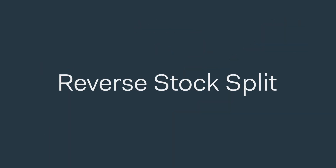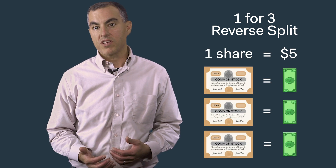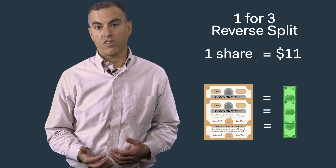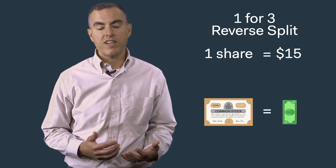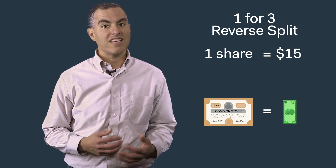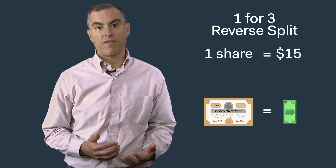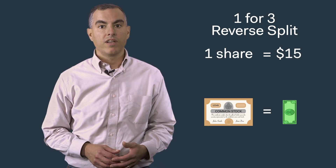There is also a reverse stock split, which is the opposite of what we just described — a split that results in an increased stock price. For example, a 1-for-3 stock split would bring a stock priced at $5 to a price of $15. A common reason to engage in such a split is to prevent a stock from being delisted, as some exchanges have a minimum price requirement.